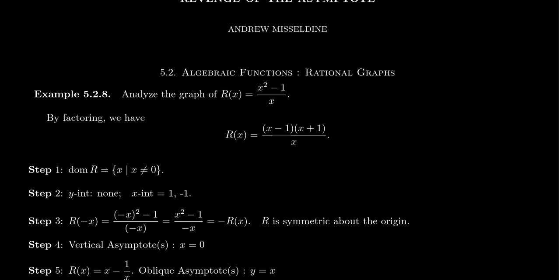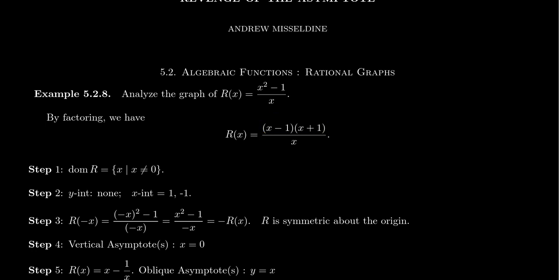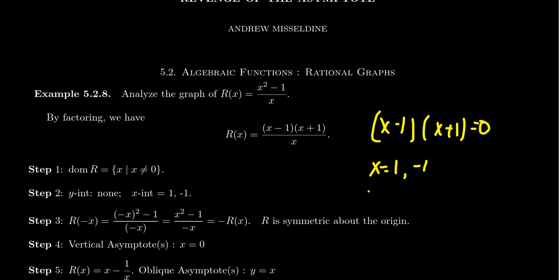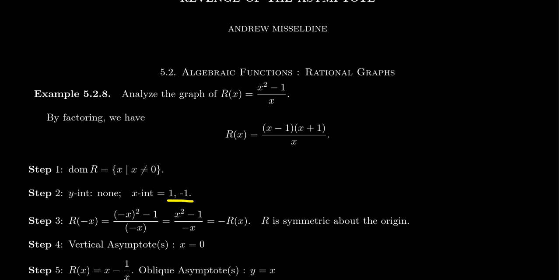For the x-intercepts — since there are no common factors to cancel, the function is already in lowest terms. What makes the numerator go to 0? If (x - 1)(x + 1) = 0, by the zero product property, x = 1 or x = -1. So we have two x-intercepts: 1 and negative 1.